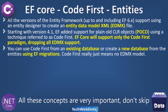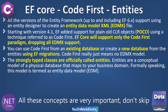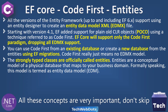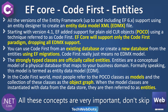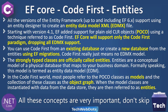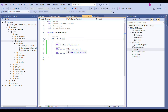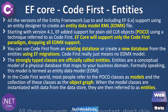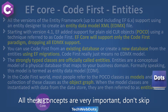Code first really just means no EDMX file — that's it. The strongly typed classes are officially called entities, and entities are a conceptual model of a physical database that maps to your business domain. This model is formally termed the Entity Data Model. In the code first world, most people refer to POCO classes as models and the collection of these classes as an object graph. When the model classes are instantiated with data from the data store, they are referred to as entities.